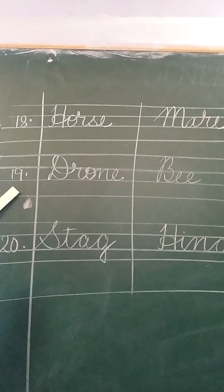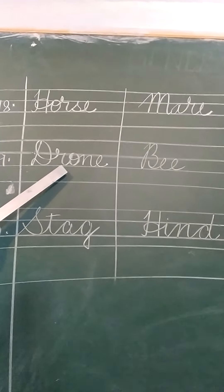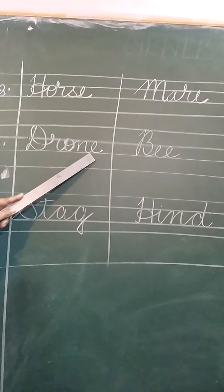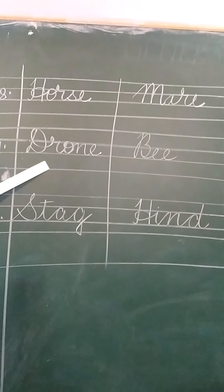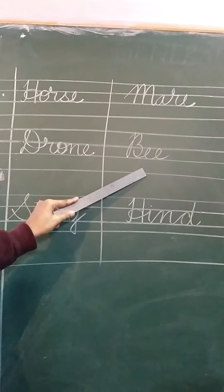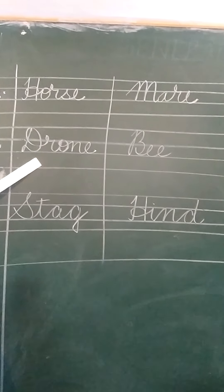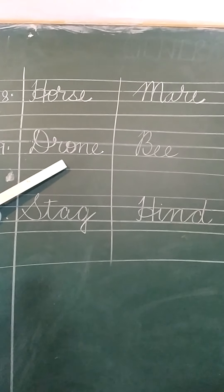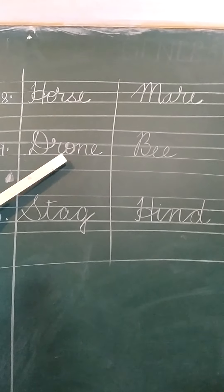Number 19 is drone. D-R-O-N-E, drone. And the female version of drone is bee. In Hindi we call it bhaura.